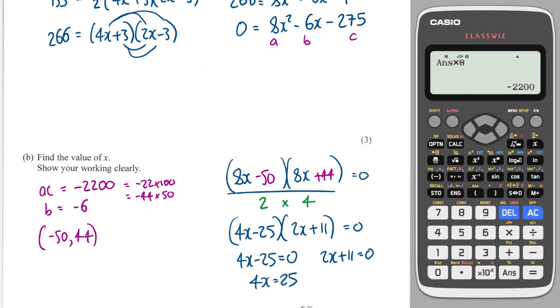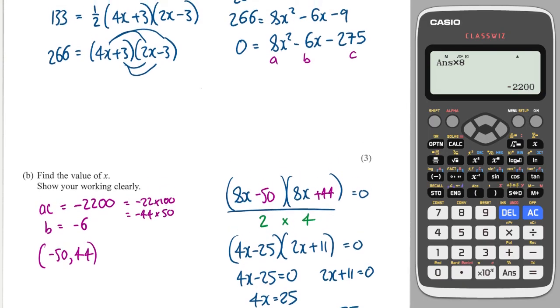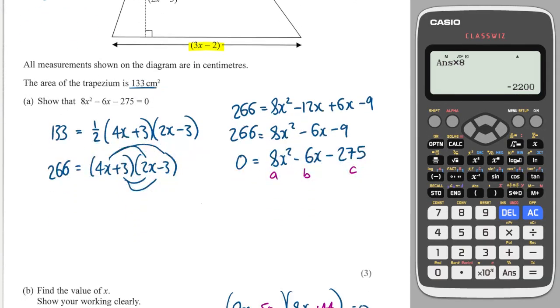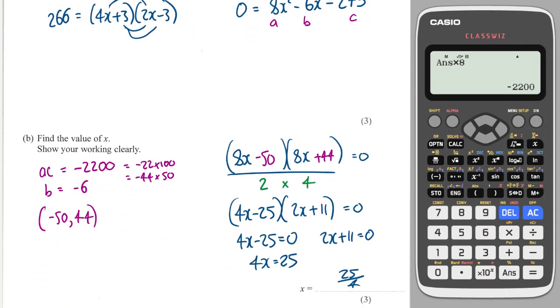Which will be 4x equals 25, so it will be 25 divided by 4. The other equation here will give me a negative answer, and that can't be correct, because this represents a distance, and we can't have a negative x value here. So, this is our final answer.